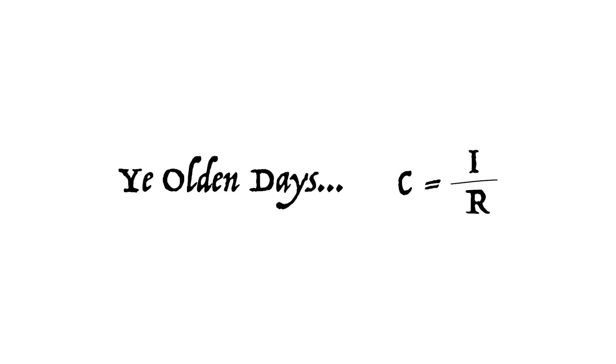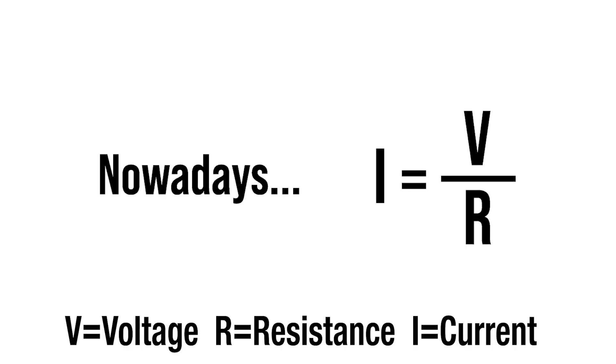At the time current, resistance and voltage were being defined, and the original formula was written as C equals I over R, but later changed to the formula that we're all familiar with today: current is equal to voltage divided by resistance.